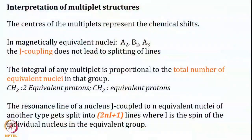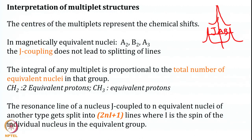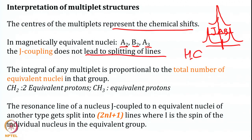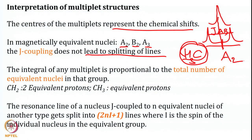The center of the multiplet represents the chemical shift. So if a peak is split into two because of J coupling, the two lines will be separated by JAB, and the center of that multiplet matches the original chemical shift. Magnetically equivalent spins — like A2, B2, or A3 — do not lead to splitting. For example, CH3 in methylene: if the spin system is A2, B2, or B3, there will be no splitting of lines.